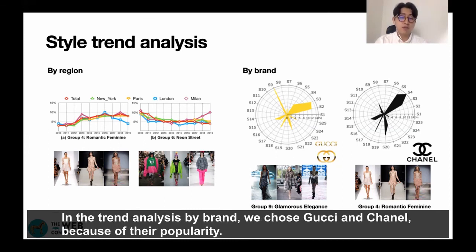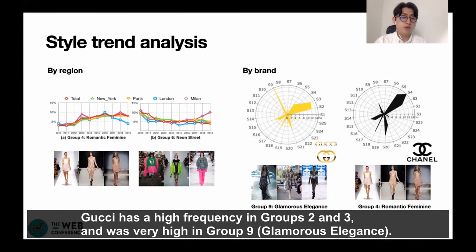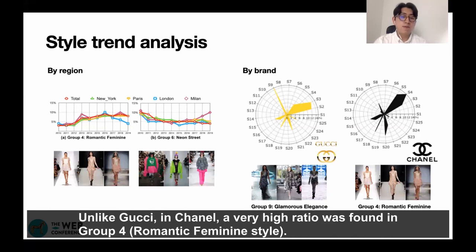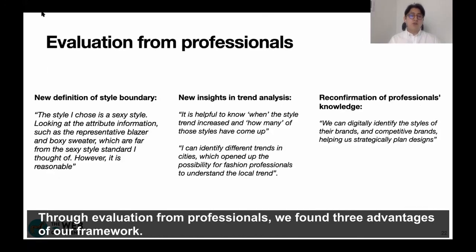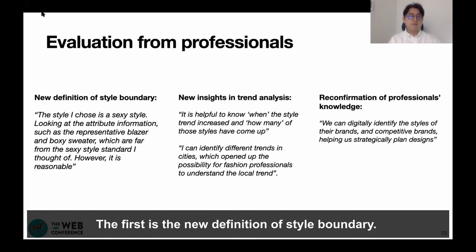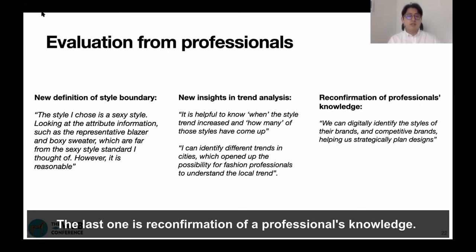In the trend analysis by brand, we chose Gucci and Chanel because of their popularity. Gucci has a high frequency in groups two and three, and was very high in group nine, glamorous elegance. Unlike Gucci, Chanel showed a very high ratio in group four, the romantic feminine style. Through evaluation by professionals, we found three advantages of our framework: a new definition of style boundaries, new insight in trend analysis, and confirmation of professional knowledge.